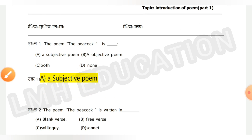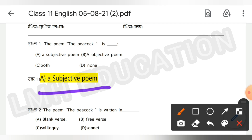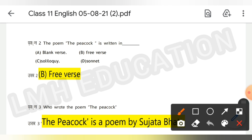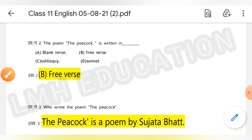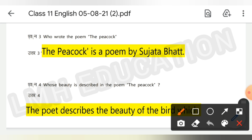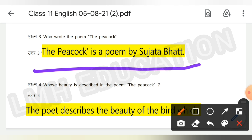Question number two: the poem 'The Peacock' is a subjective poem. The answer is (b) free verse. Third question: who wrote the poem 'The Peacock'? The answer is — 'The Peacock' is a poem by Sujata